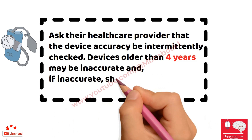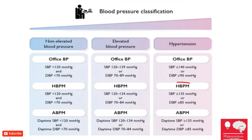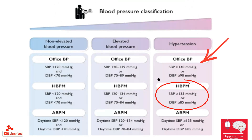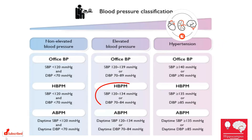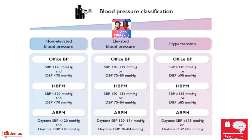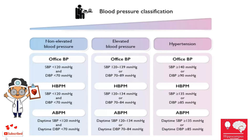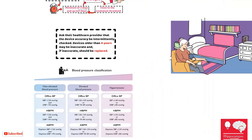An average home blood pressure measurement of more than or equal to 135/85 millimeter of mercury — equivalent to an office blood pressure of more than or equal to 140/90 — should be used to diagnose hypertension. An average systolic blood pressure of 120 to 134 millimeter of mercury or diastolic blood pressure of 70 to 84 millimeter of mercury should be used to diagnose elevated blood pressure. Of note, the same lower blood pressure threshold of 120/70 millimeter of mercury is used for both office and home blood pressure measurement in defining elevated blood pressure.